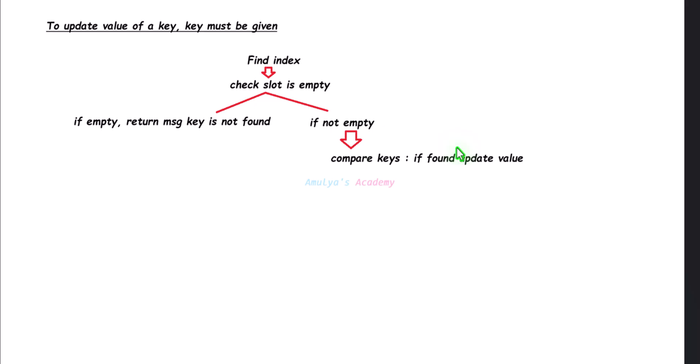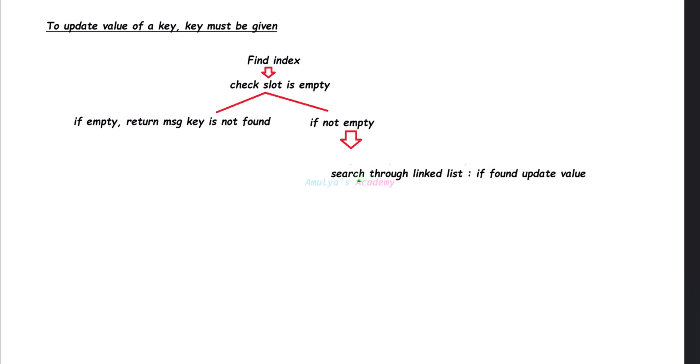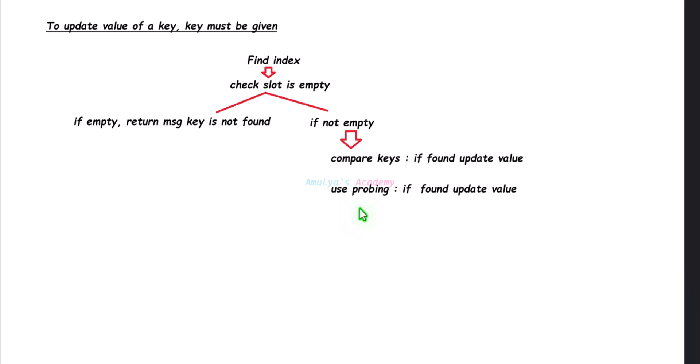If the key is not matched, return the message 'key is not found'. In the hash table, if the chaining method is used to handle collision, then you need to search through the linked list for the key. If the key is found, update the value; if the key is not found, return the message 'key is not present in the hash table'.